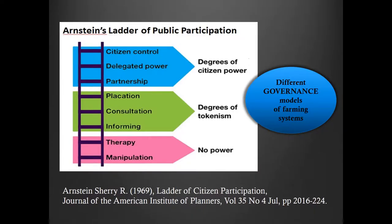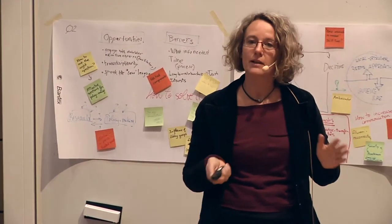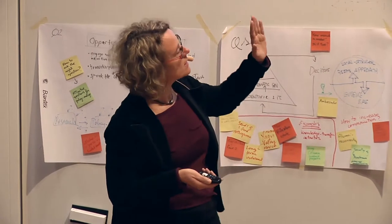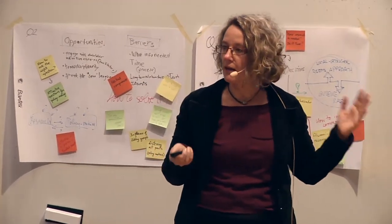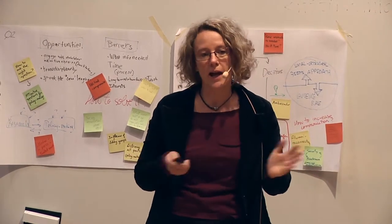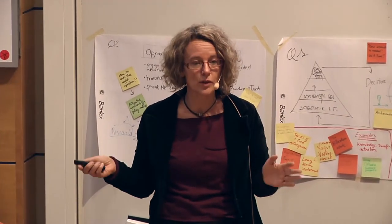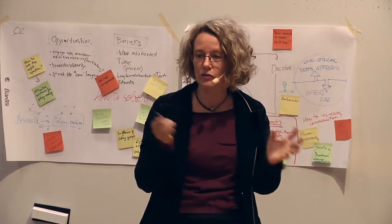One important thing that relates to Henrik's question is that these degrees of involvement actually relate to different kinds of governance models. There are structures to organize the way we do things, and what Henrik said — maybe we want another kind of system — is really important. The way you interact will actually influence how you think about governing natural or human-natural systems.